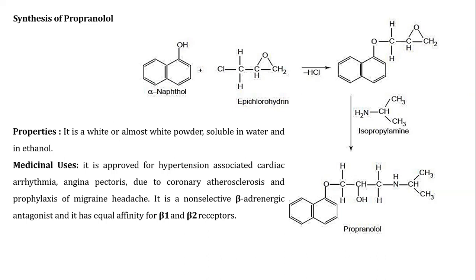Next is the synthesis of propranolol. Propranolol can be synthesized by the reaction between alpha-naphthol and epichlorohydrin, resulting in the synthesis of an intermediate. Further, the intermediate is treated with isopropylamine, resulting in the synthesis of the desired drug, propranolol.